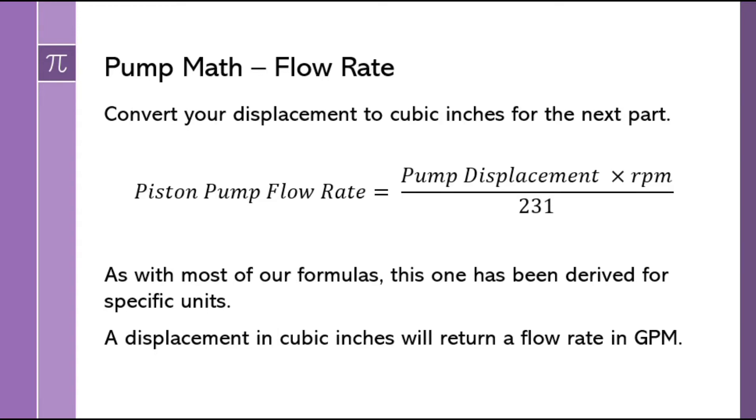So our first formula is to figure out your pump flow rate. We're going to take the displacement in cubic inches and multiply it by the engine speed, whatever speed I'm asking about the flow rate at, and divide it by 231, which is just a conversion to get from cubic inches to gallons. That flow rate will be in gallons per minute.